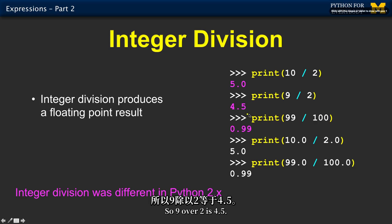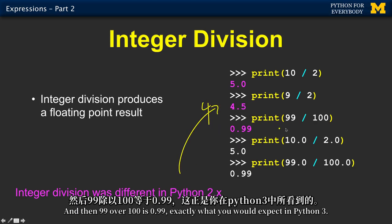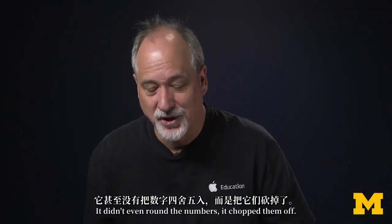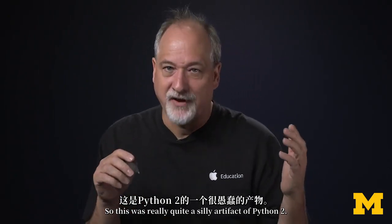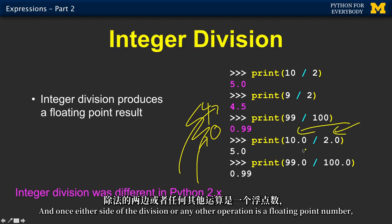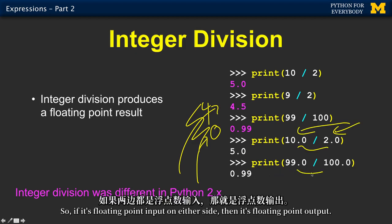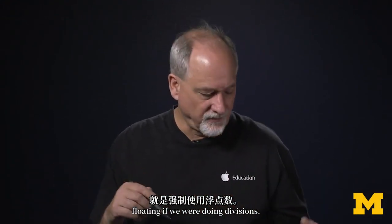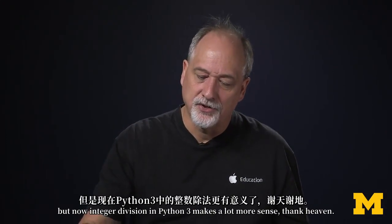So 9 over 2 is 4.5. In Python 2, this used to be 4. And then 99 over 100 is 0.99, exactly what you'd expect in Python 3. In Python 2, that was a 0. Why? Because it truncated. It didn't even round the numbers. It chopped them off. So this was really quite a silly artifact of Python 2. In Python 2, if you get stuck in Python 2, you just use floating point numbers. And once either side of the division or any other operation is a floating point number, then the calculation is done in floating point. So if it's floating point input on either side, then it's floating point output. And this is what we used to have to do kind of in Python 2 is force things to be floating if we were doing divisions. It wouldn't hurt to do it in Python 3. But now integer division in Python 3 makes a lot more sense. Thank heaven.